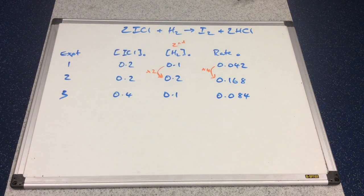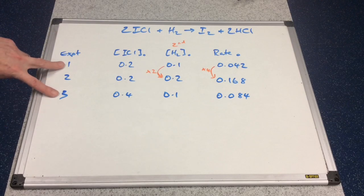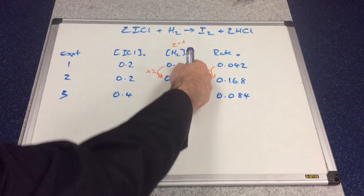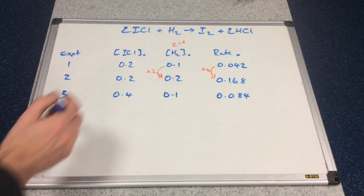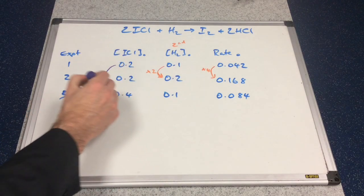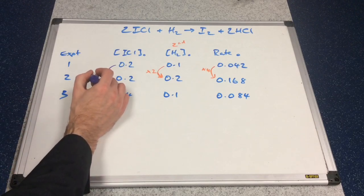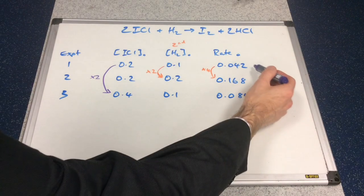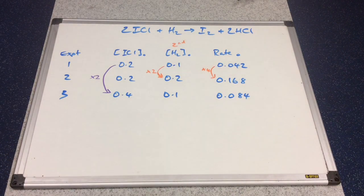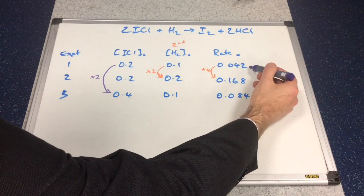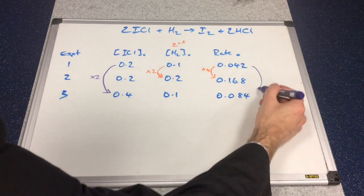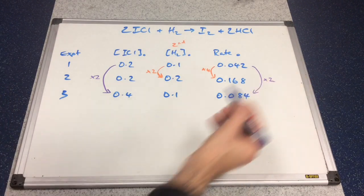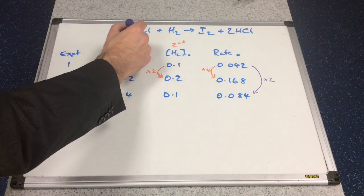That tells us the order with respect to hydrogen must be two — so this is second order. Turning our attention to ICl, using experiments one and three we can keep the concentration of hydrogen constant. The concentration of ICl has doubled. Has the rate stayed the same? No. Has it doubled? Yes — it's gone from 0.042 to 0.084. So this is a doubling effect, meaning ICl is first order.